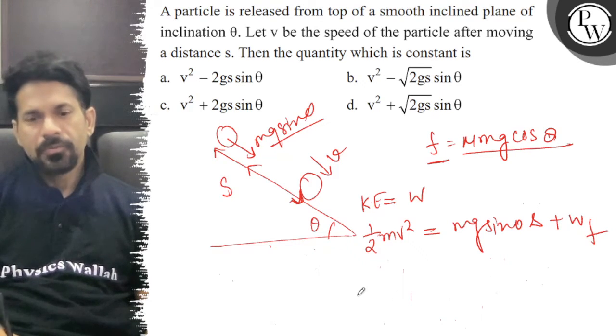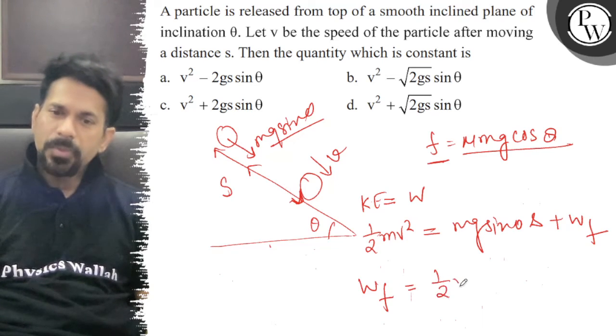Work done by friction, that is equal to half mv square minus mg sin theta into displacement s.